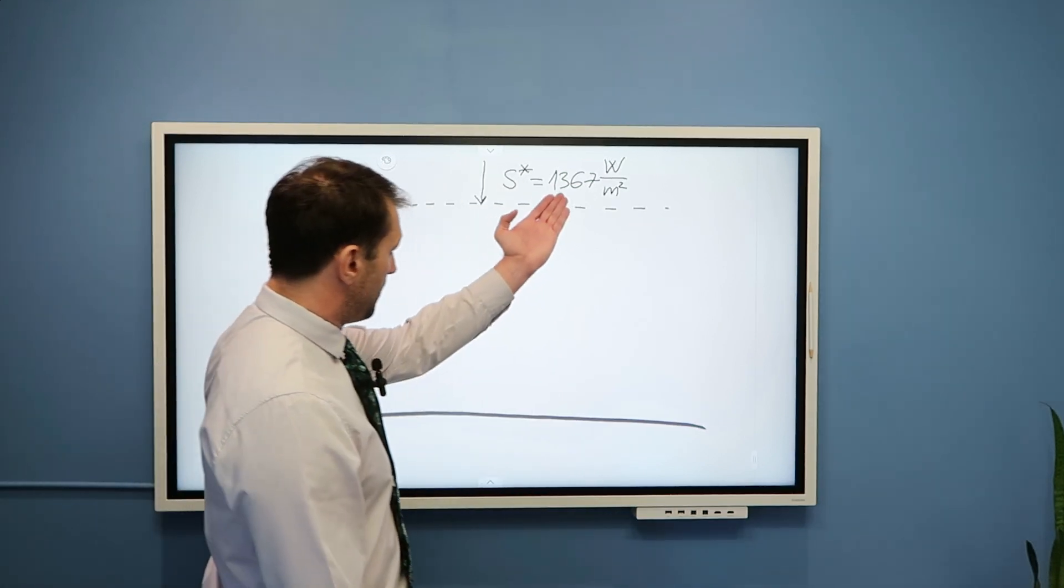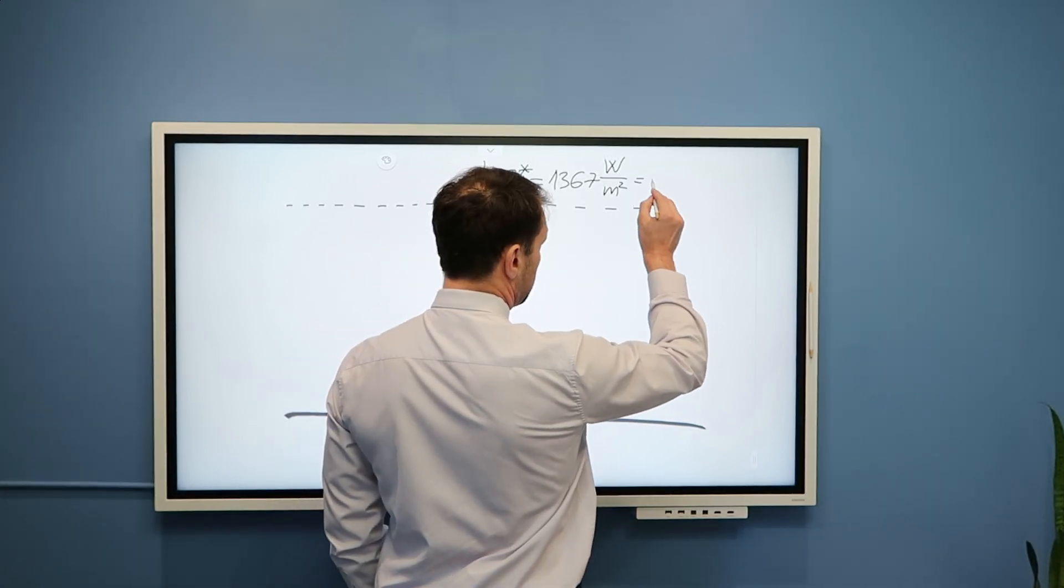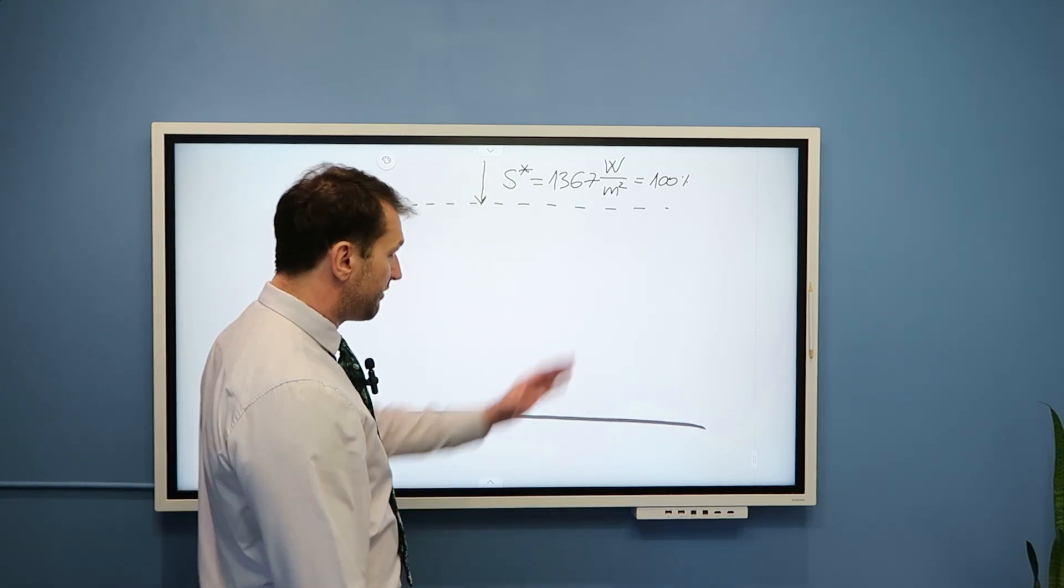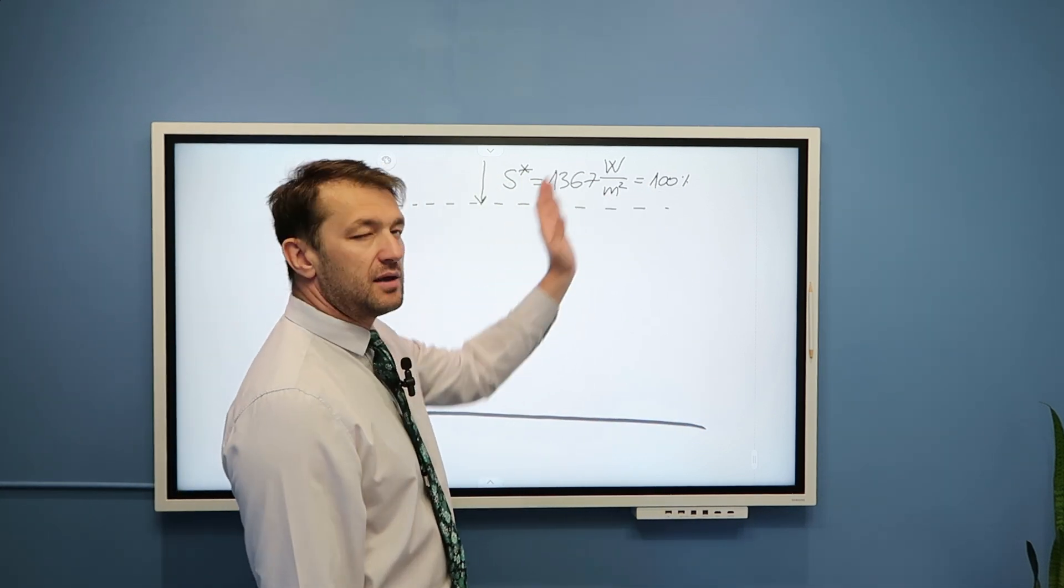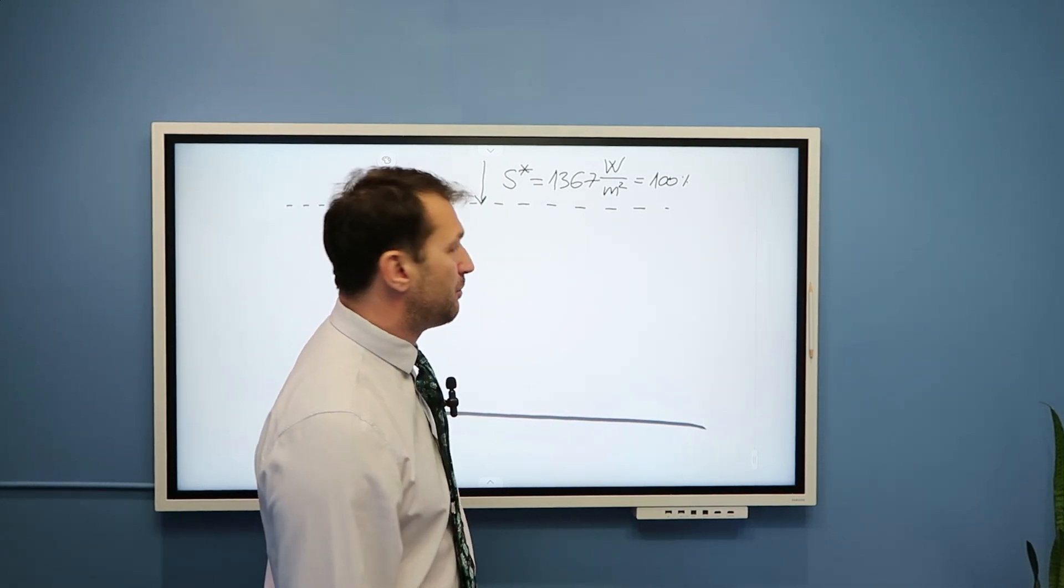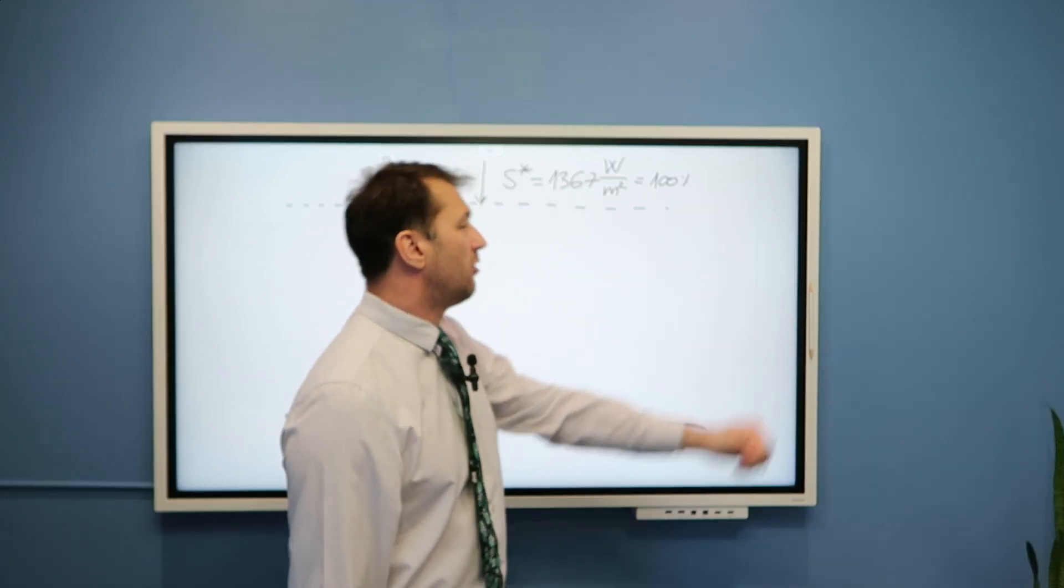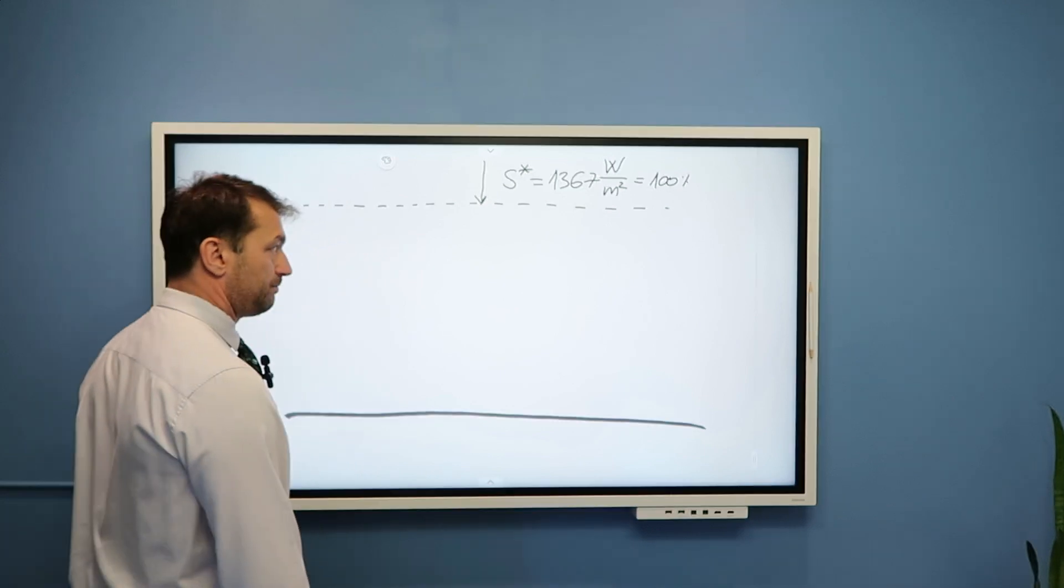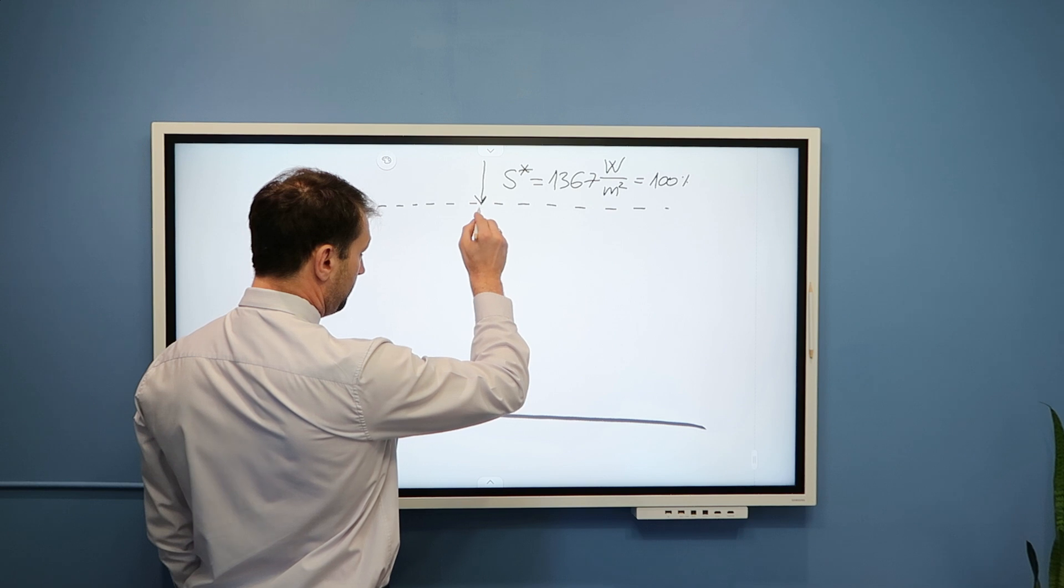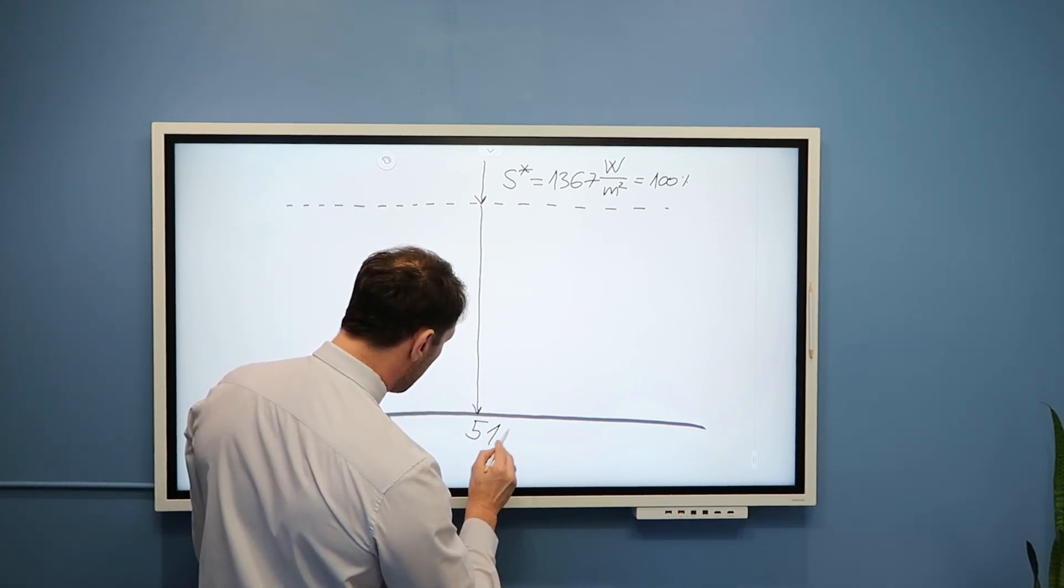Now, because this number is not some nice number, we usually consider this as 100% of radiation that we receive, and then we can say 70%, 30%, 20% is going to different processes, and then you can calculate what is 20% of this number. Some books or people also call this 100 units of radiation, whatever you prefer. At any rate, out of this 100% of radiation, Earth's surface absorbs approximately 51%.